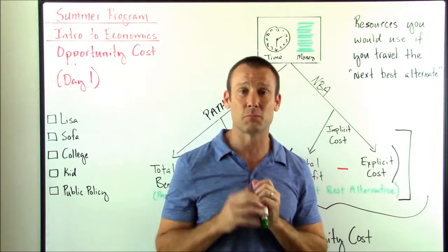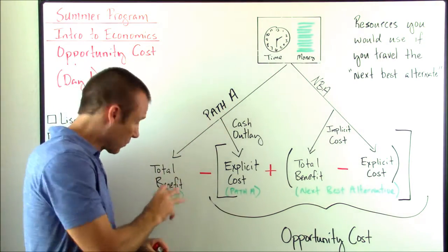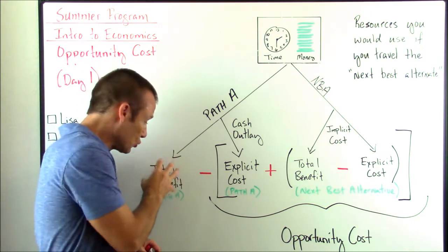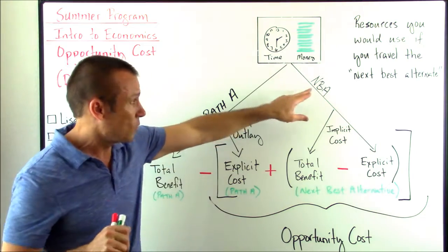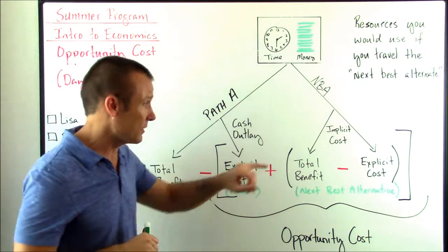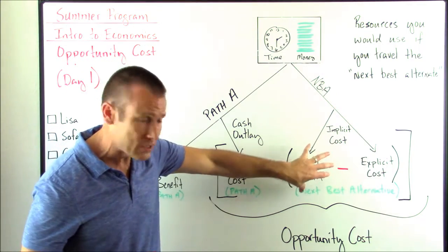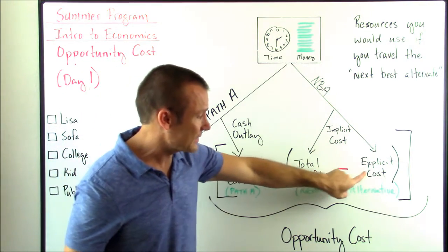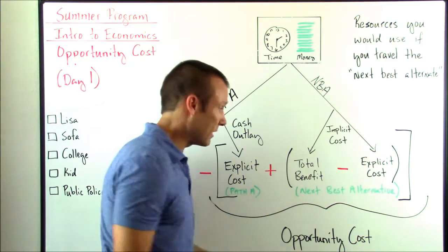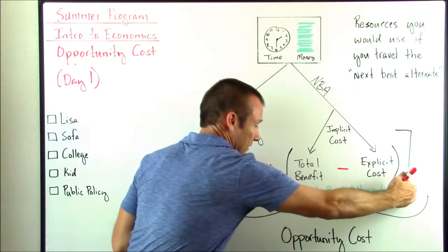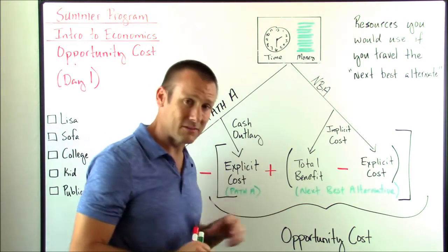Let's see if this diagram gives us the right result. Path A is buying the sofa. The total benefit is the utility — the joy — from the sofa, minus the explicit cost of $2,000. The next best alternative is buying that new mattress. The total benefit is the utility from the mattress, minus the explicit cost of the mattress, which is also $2,000. That $2,000 and that $2,000 cancel out. So what is the cost of buying the sofa? It is the mattress.